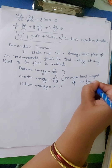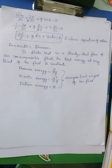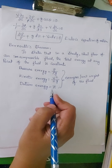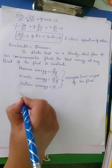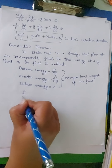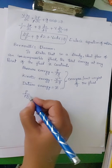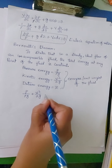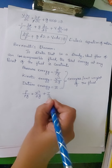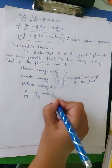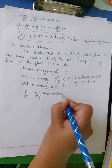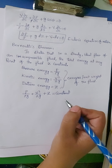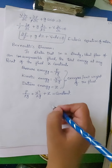Mathematically, we can write Bernoulli's theorem as the summation of all these energies: pressure energy P divided by rho G, plus kinetic energy V squared divided by 2G, plus datum energy Z — these three summed are constant. This is Bernoulli's theorem.